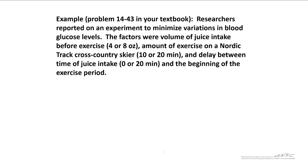Let's take a look at an example in your textbook. We're not going to solve this completely, but we're going to set it up. Researchers reported on an experiment to minimize variations in blood glucose levels. They had three factors, juice intake before exercise, a low and a high level, amount of exercise on a Nordic track cross-country skier, 10 or 20 minutes, and delay between time of juice intake, 0 or 20, and the beginning of the exercise period. So we have three factors. Each are present at a low and high level.